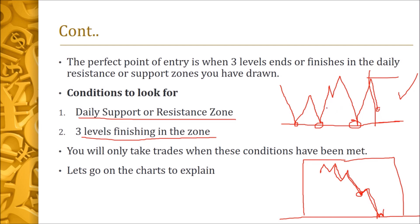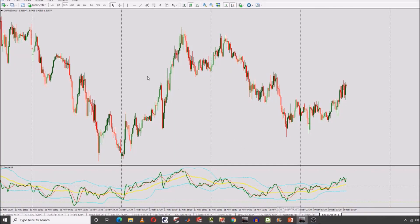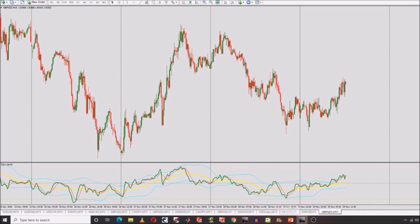Sometimes we will have a daily support but only two levels coming into that daily support zone. With only two levels there is a greater probability of breaking through that daily support zone, so two levels alone are not sufficient — we need three.